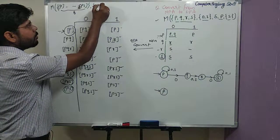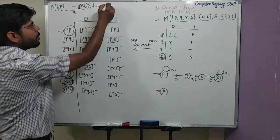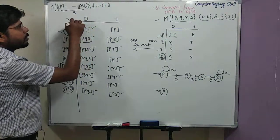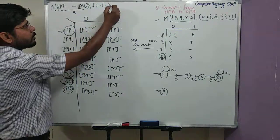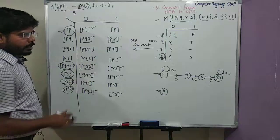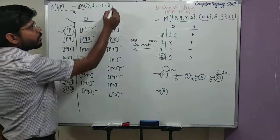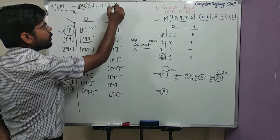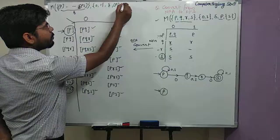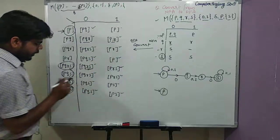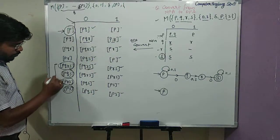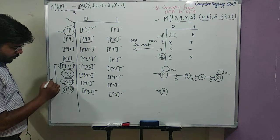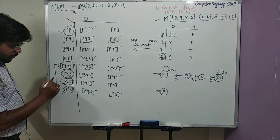This is your transition function for the DFA. The initial state is again P, and we have four final states.